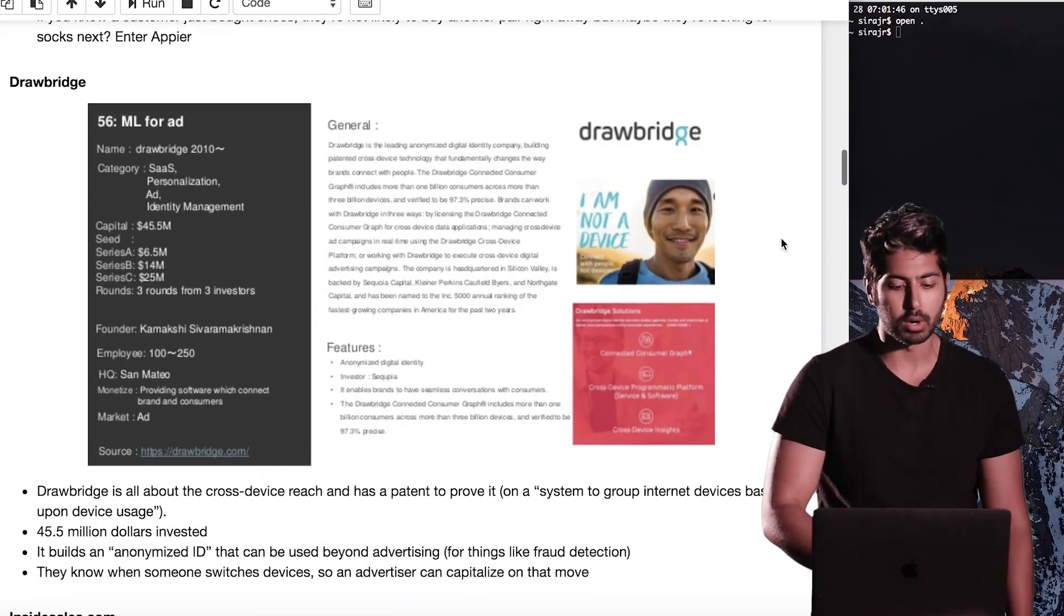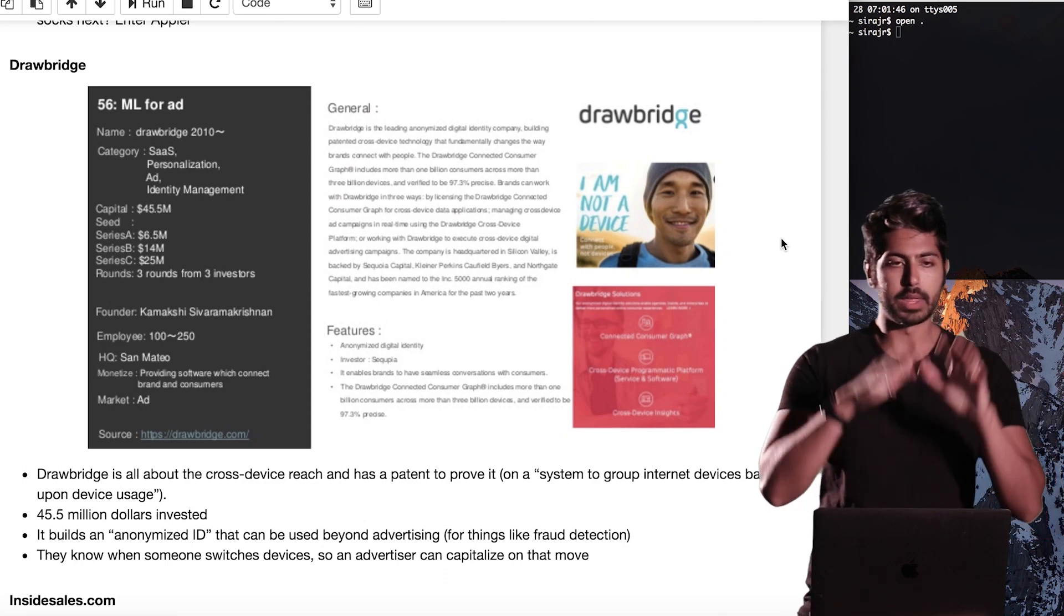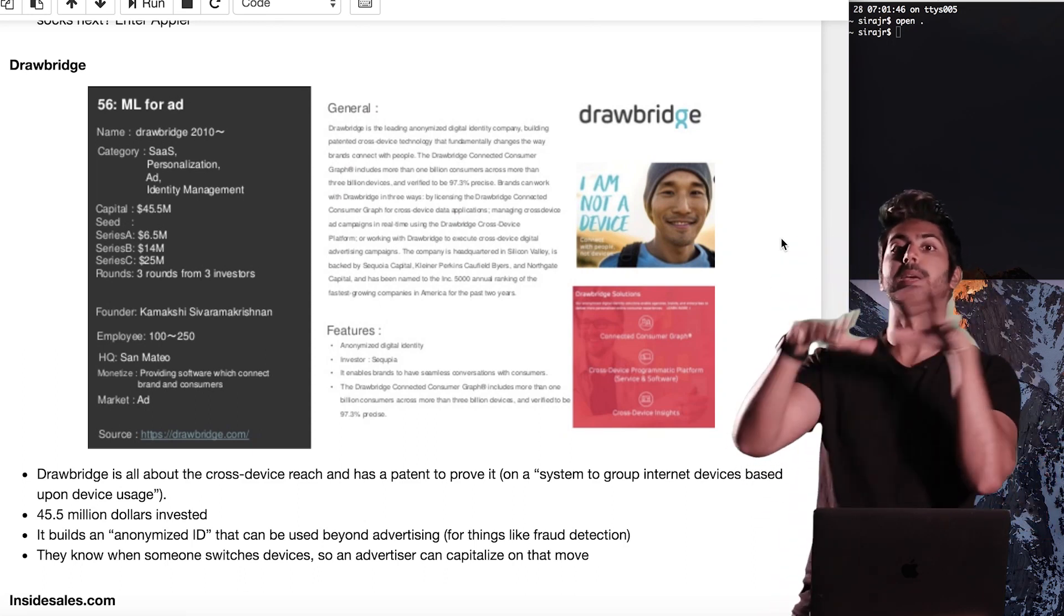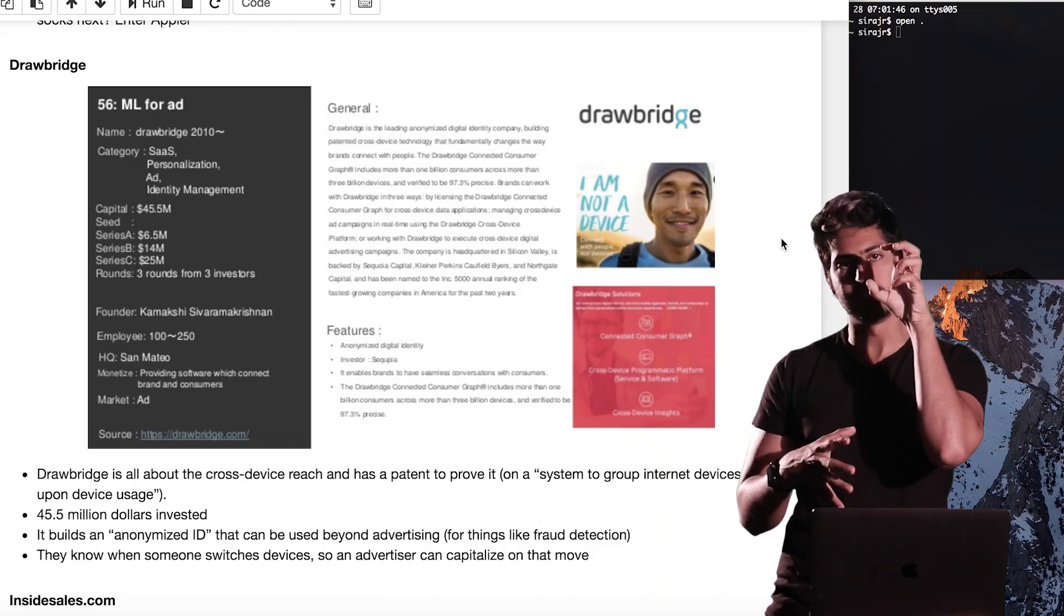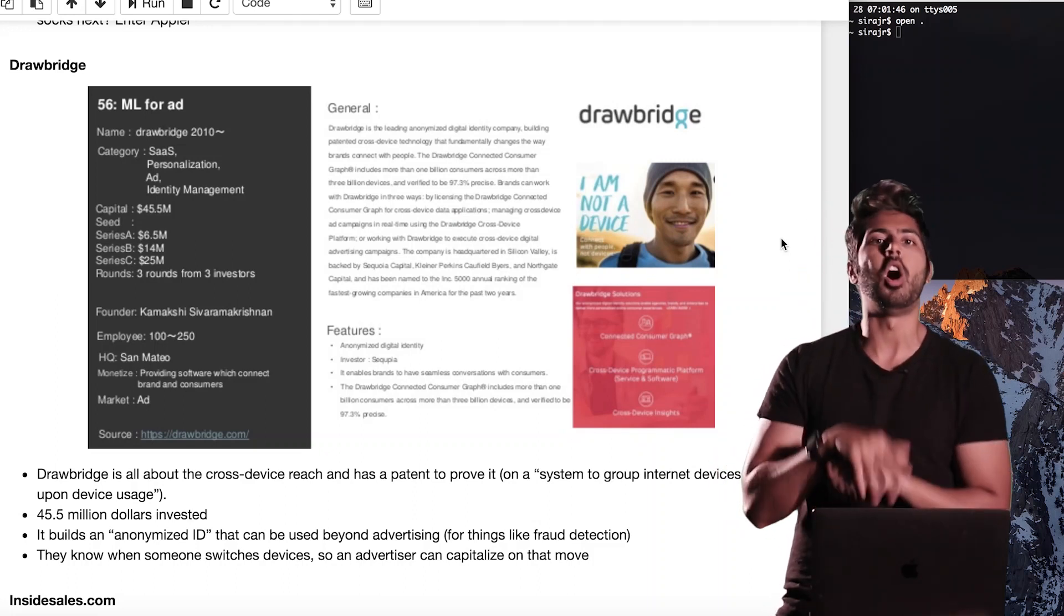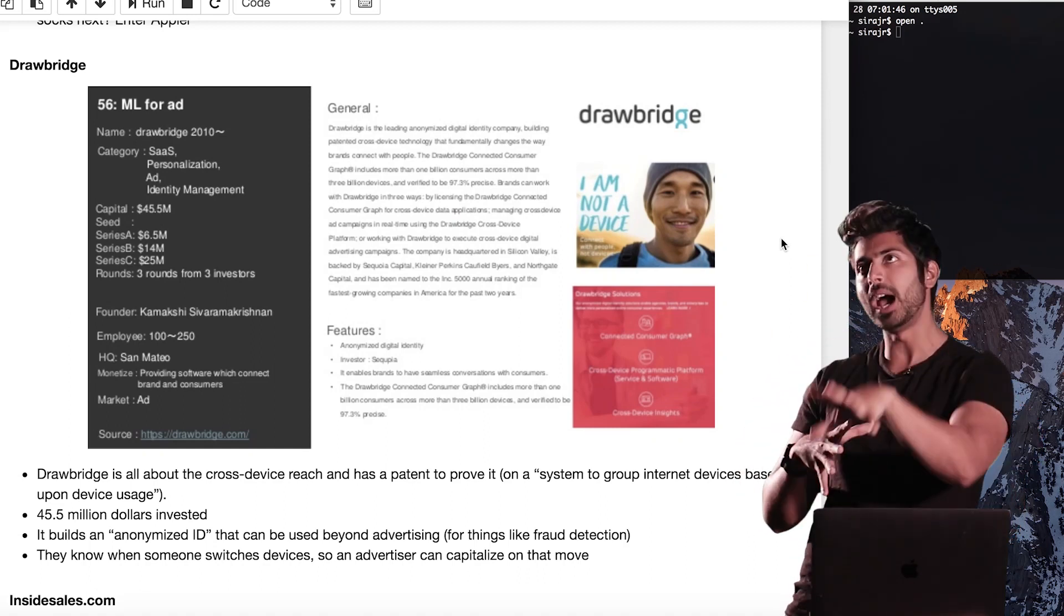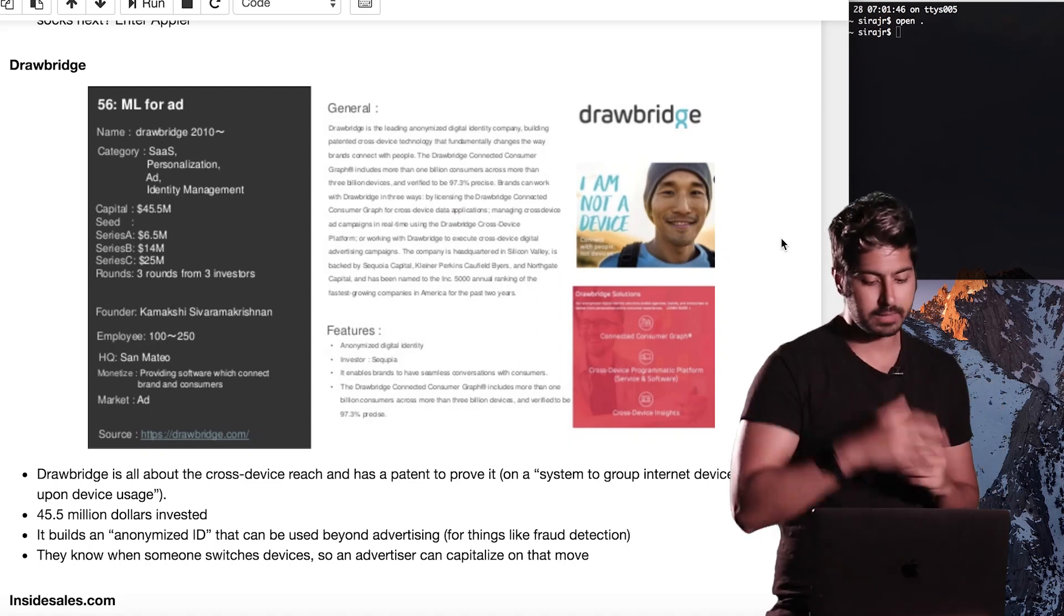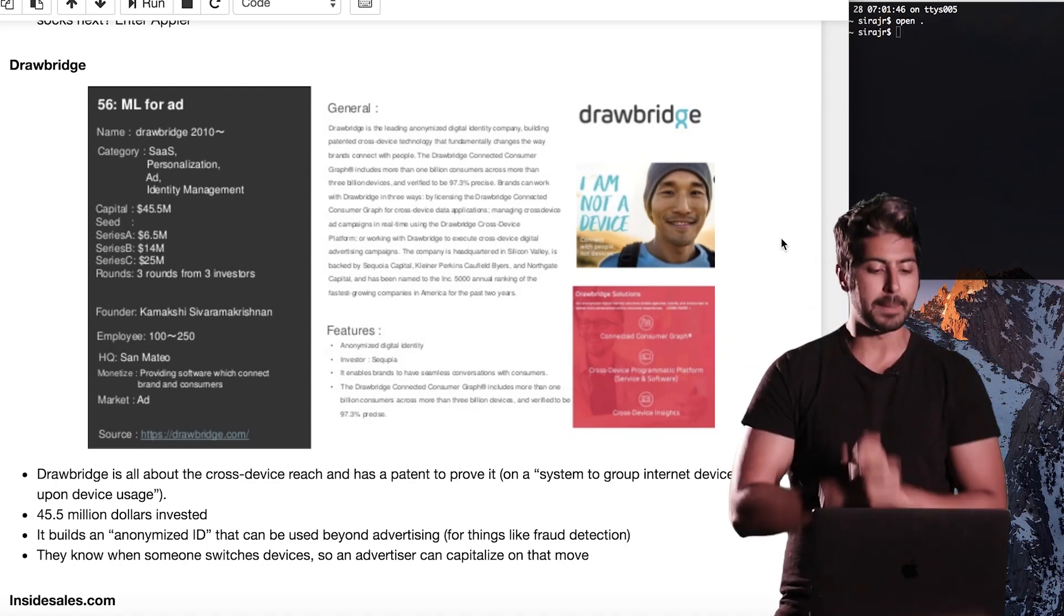Another example is Drawbridge. So users switch devices all the time. They can be on mobile, they can be on desktop, they can be on a PS4. And ideally we can target the type of content to the specific device that they're on at the time. And so that's what Drawbridge does. It predicts what times that a user is going to be on a specific platform and then allows a brand to create content based on that platform.